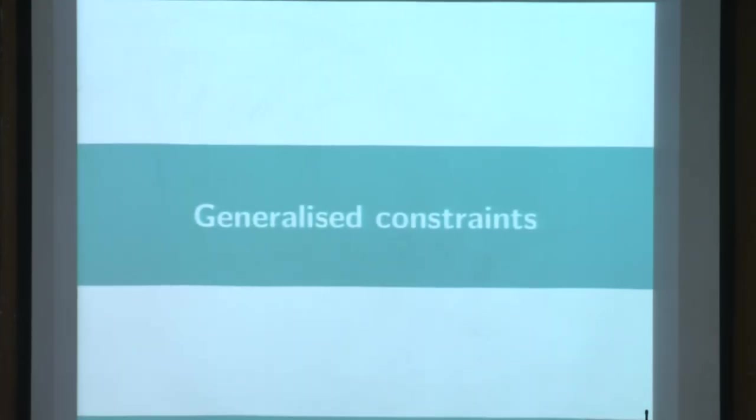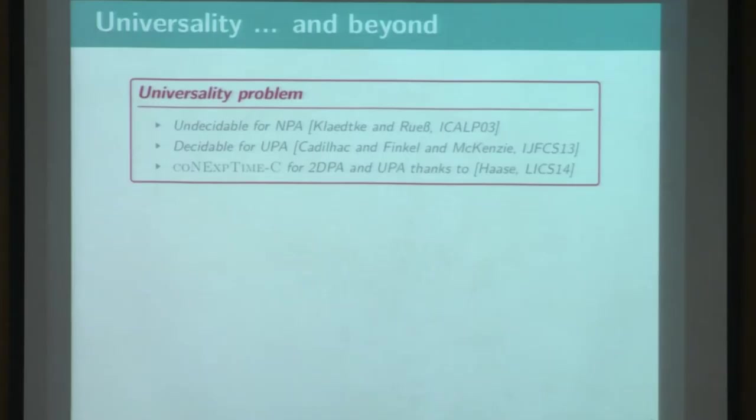So then I only speak about those non-emptiness problems, but we can also think about universality. So in the initial paper, this universality has been proved undecidable for one-way Parikh automata, and basically this is due to the fact that the complementary of such automata is not, this class is not closed under complementary.